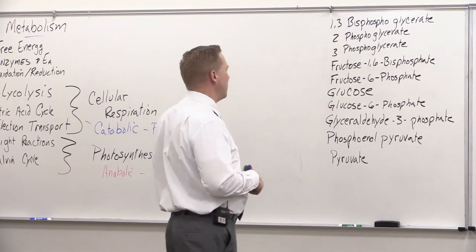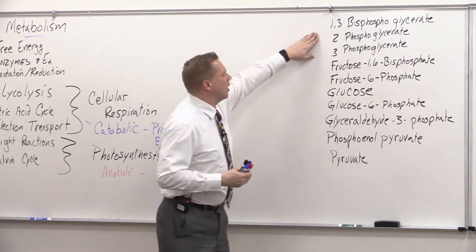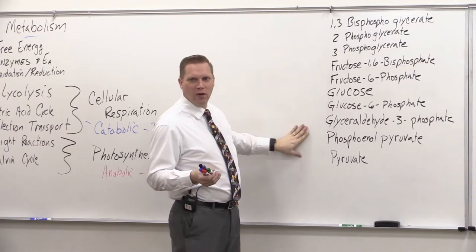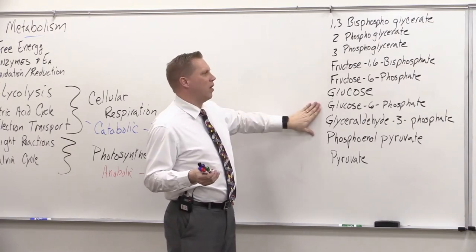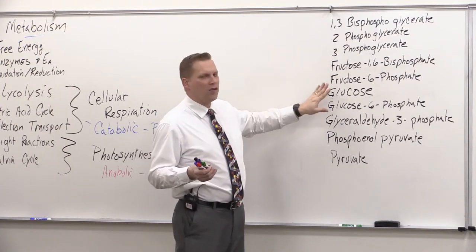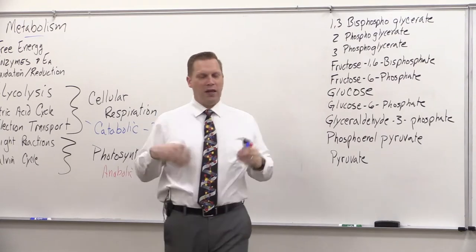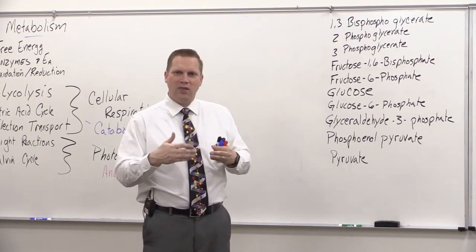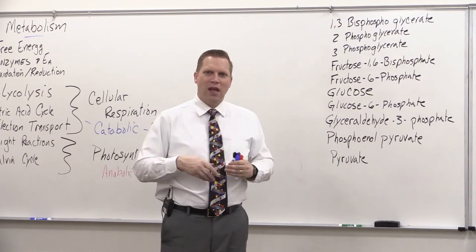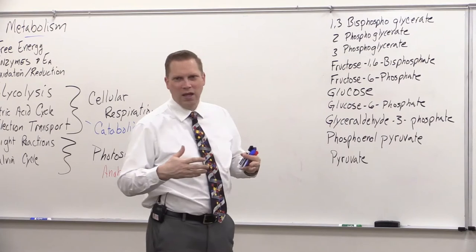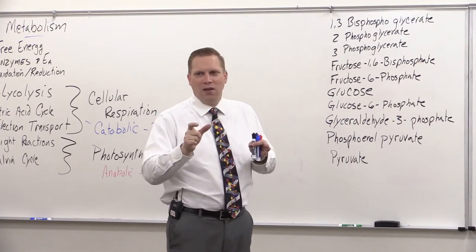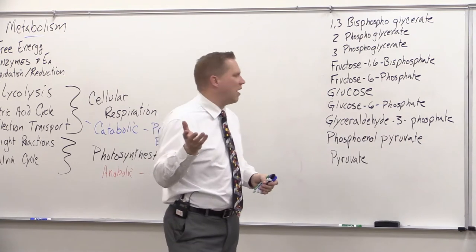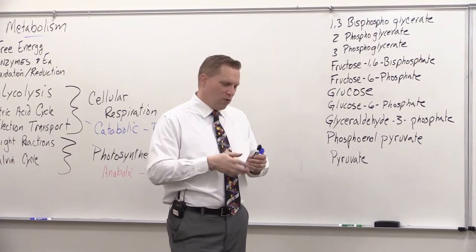Let's get started with glycolysis, looking at the different intermediates and what's happening at each stage. There are 10 intermediates in glycolysis. I've written them in alphabetical order — not the order they occur in the pathway — but it gives us a list to draw from. I want to teach you to pull out, just by looking at the names, the order they go in. In a pathway, enzymes can only make small incremental changes, so we look for the most logical next intermediate based on its name.